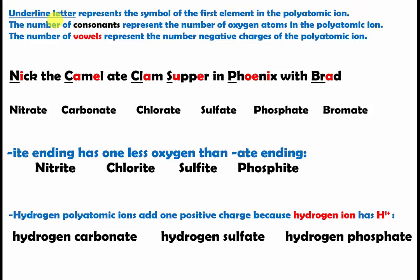The first pattern: the underlined letters represent the symbol of the first element in the polyatomic ion. The number of consonants represents the number of oxygen atoms in the polyatomic ion. And the number of vowels represents the number of negative charges of the polyatomic ion.